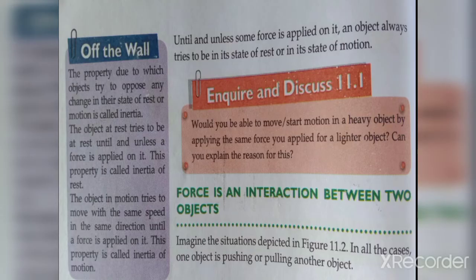Until and unless some force is applied on it, an object always tries to remain at rest. Here we learn one thing, which is inertia. Inertia is the property due to which an object tries to oppose the change in the state of motion. So an object does not want to change its state on its own.